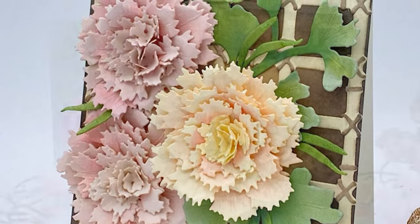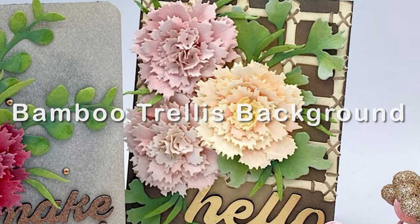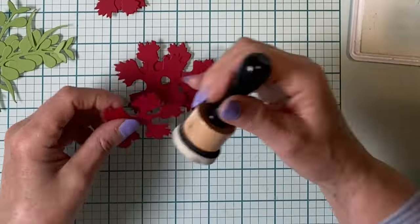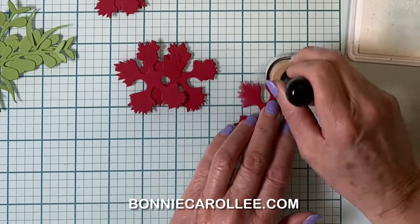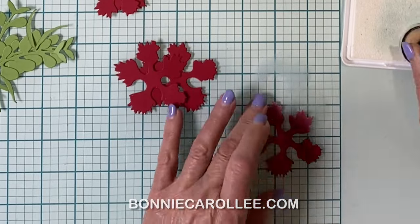On one of the cards I'm using a beautiful new background die, Bamboo Trellis. This tutorial will feature the card with the single carnation. The second card with a few minor variations has been highlighted on my blog at bonniecarolee.com.